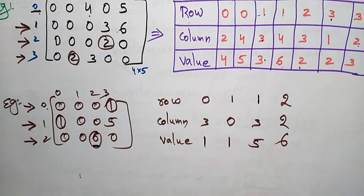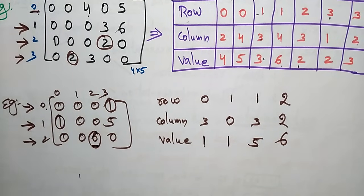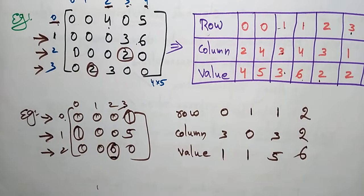This is how you can represent it in triplet form. This is about the array representation. In the next video, I'll explain about the linked list representation.